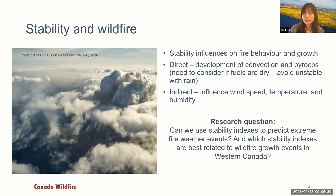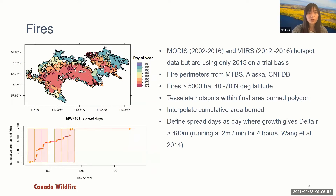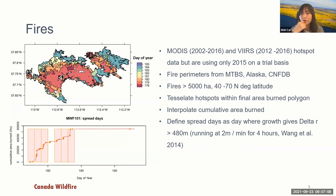The relationship between atmospheric stability and wildfires has not been extensively studied, especially in the Canadian climate. For this research, we want to answer: can we use stability indexes to predict extreme fire weather events, and which stability indexes best relate to fire growth events in western Canada? For this study, we use MODIS and VIIRS hotspots to map fire growth, and for this presentation we use the 2015 fires as a trial basis.